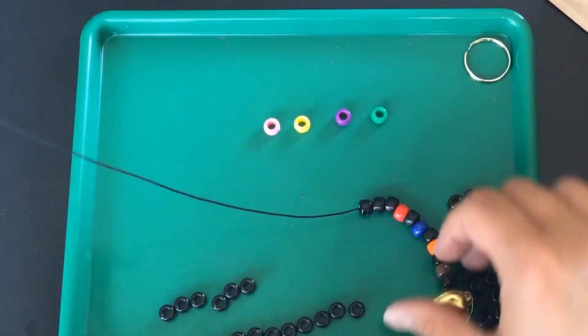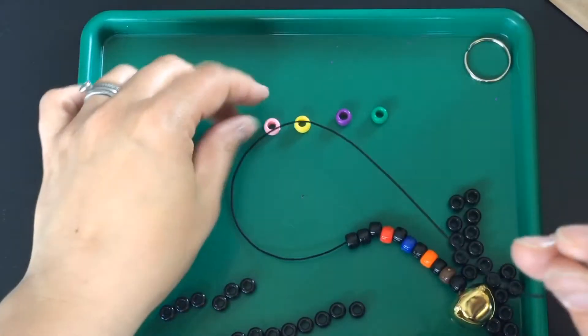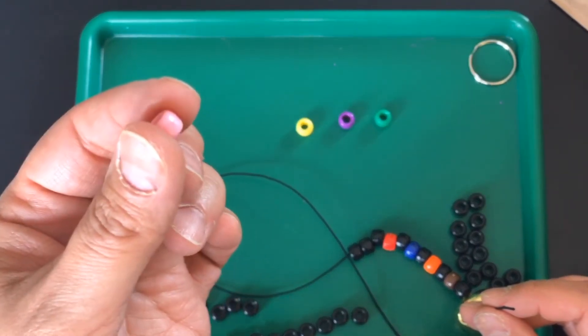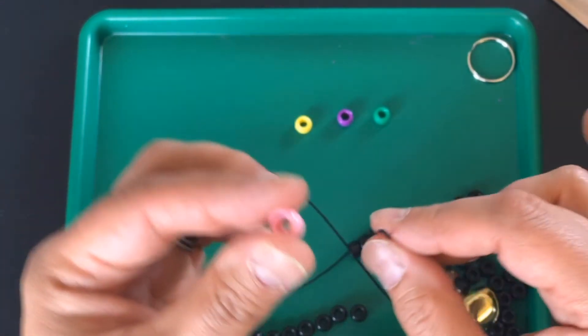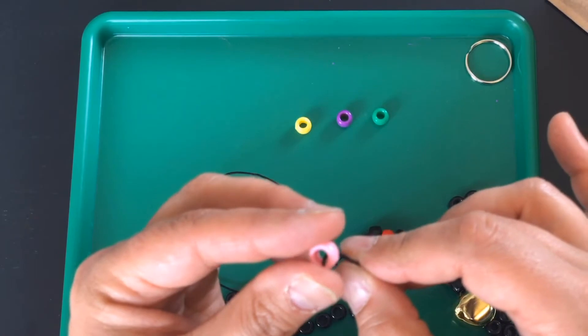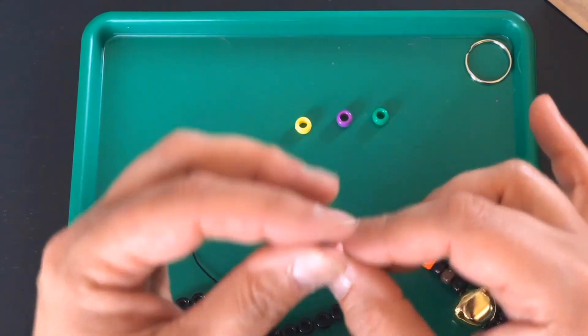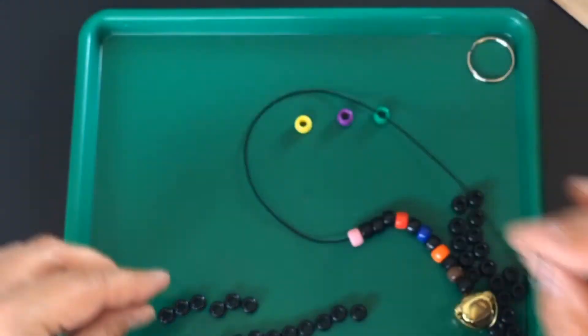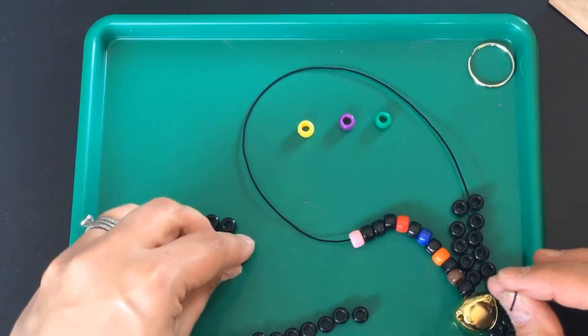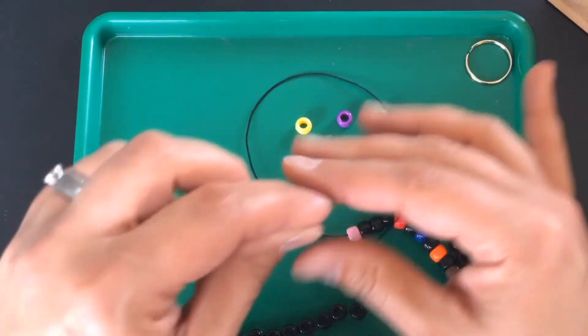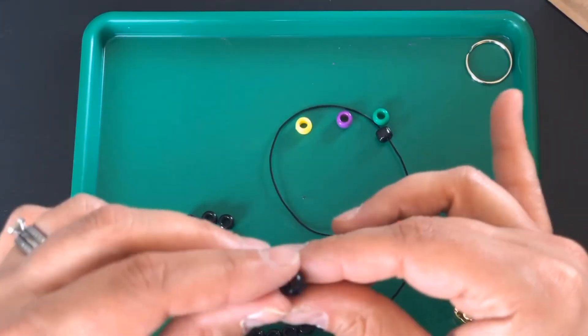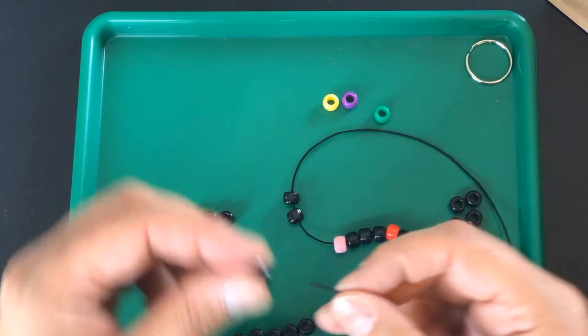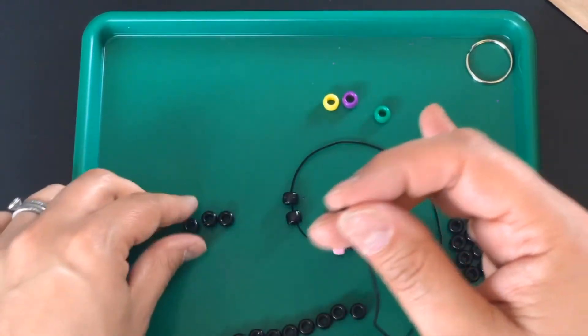I put the three beads on and then the next planet is we're going to use the pink bead. The next planet is Jupiter, Jupiter, one of the gas giants. I'm going to put Jupiter on. Now after Jupiter I am going to put six black beads on. Again, the distance is increasing between the planets. So six black beads go on.